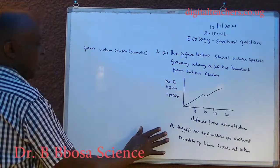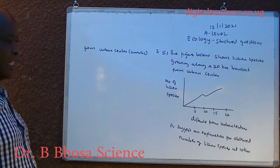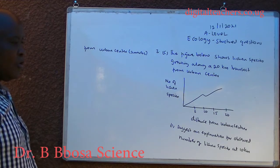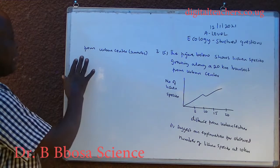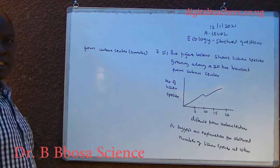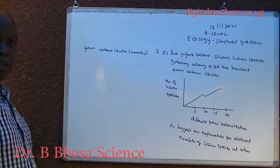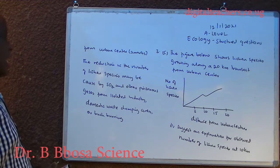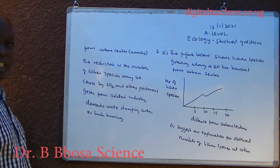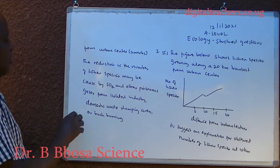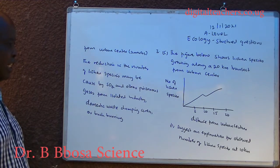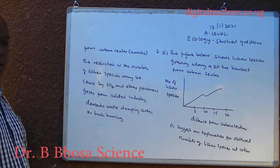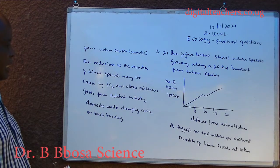Part 2 suggests an explanation for the observed number of lichen species at 10 kilometers from the urban center. You can pause and answer. The reduction in the number of lichen species may be caused by sulfur dioxide and other poisonous gases from an isolated industry.